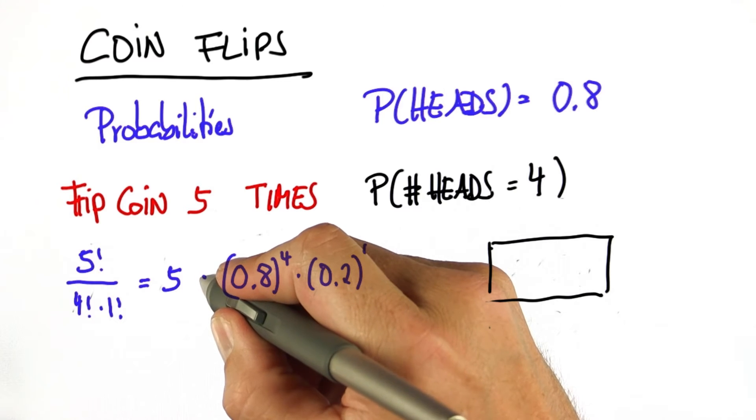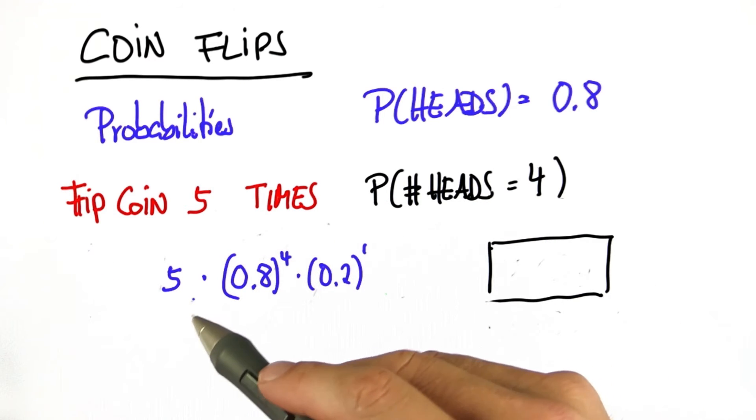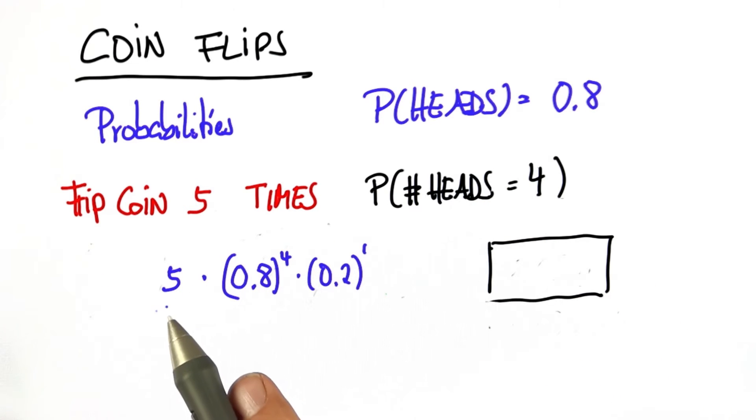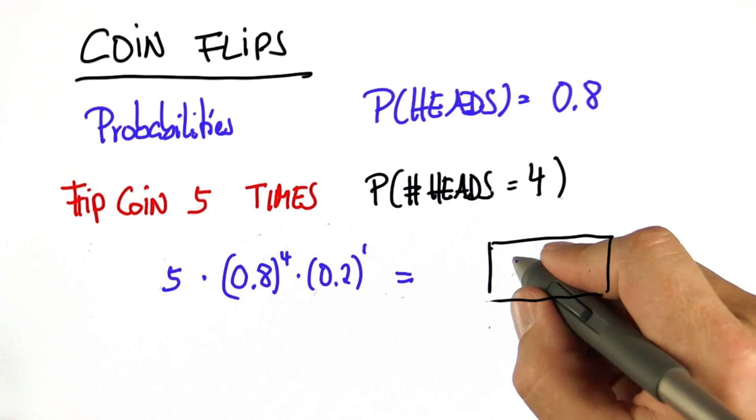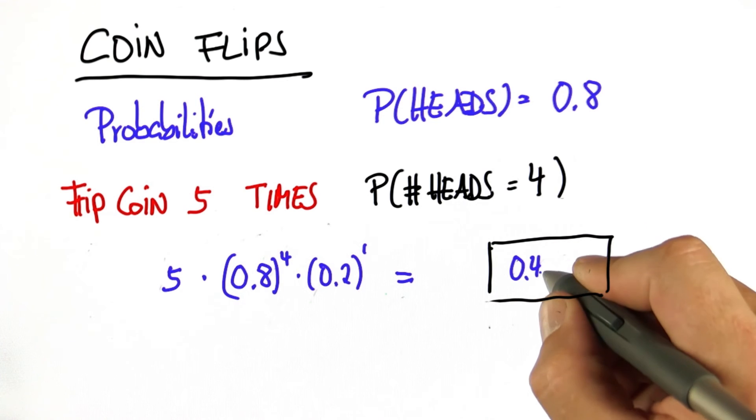So what we do is we multiply the total number of outcomes that have this property with each one's probability, which happens to be the same because we get exactly 4 times heads and 1 times tail. And multiplying these things together gives us 0.4096.